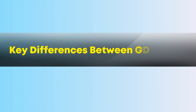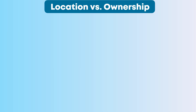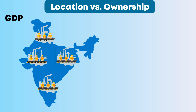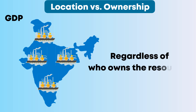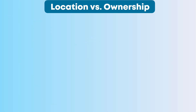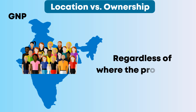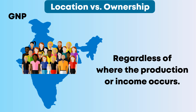Key differences between GDP and GNP. Location versus ownership: GDP focuses on production within a country's borders, regardless of who owns the resources. On the other hand, GNP focuses on the income of a country's residents, regardless of where the production or income occurs.